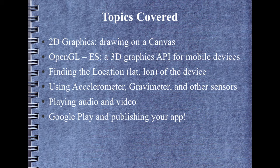We'll talk about finding the location of the device — the latitude and longitude — and displaying that for the user. We'll also talk about other hardware sensors the device has, such as thermometers, accelerometers, and gravimeters, that allow us to find out where the device is in space: its position, orientation, and acceleration at a given point in time.